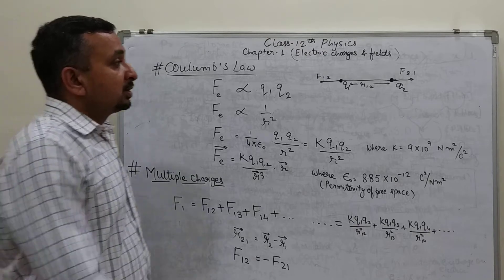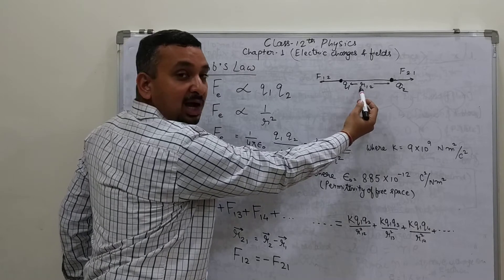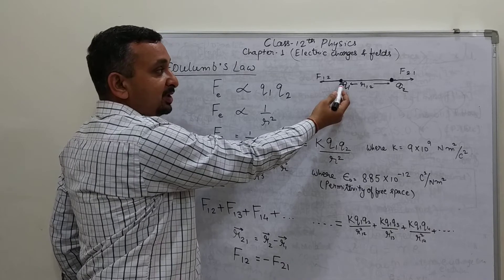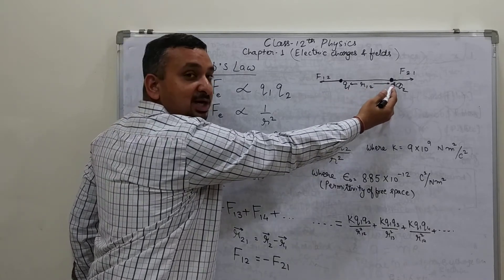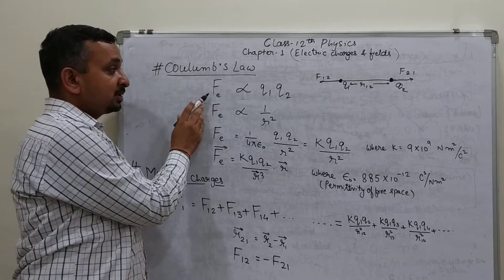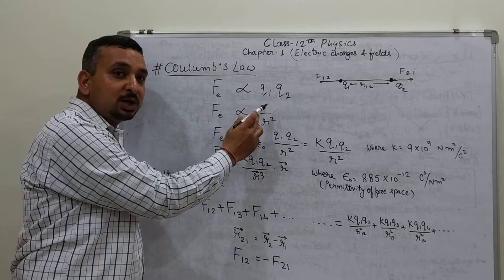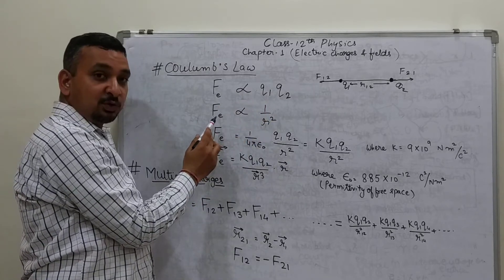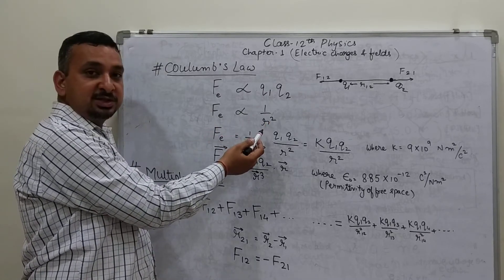Suppose we are having two charges q1 and q2 separated by a distance r12. Now the force experienced by charge q1 is F12, due to q2, and the force experienced by charge q2 due to q1 is F21. Now we can say that the force between any two charges q1 and q2 is directly proportional to the product of their magnitudes and inversely proportional to the square of the distance between the two charges.